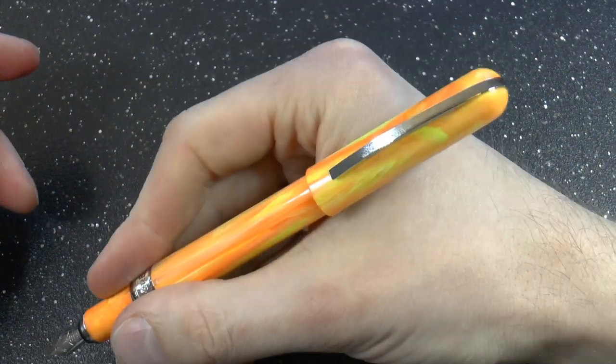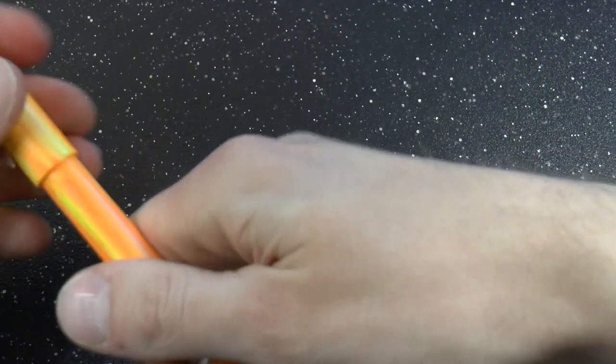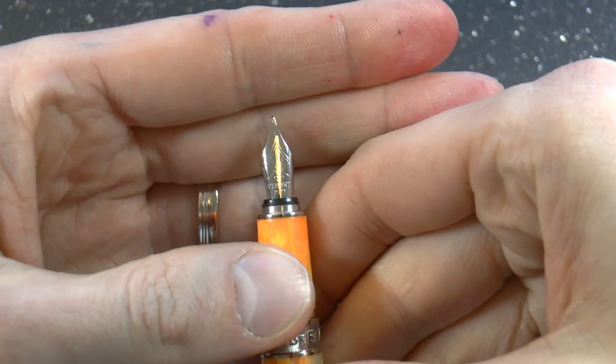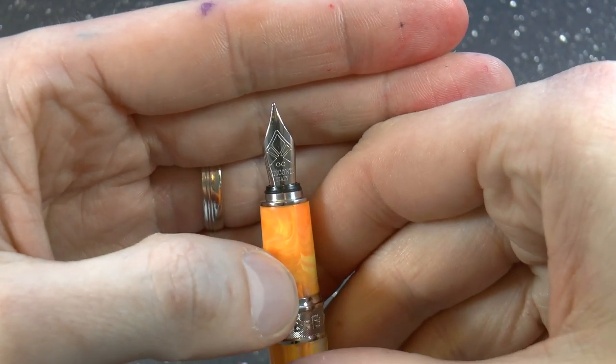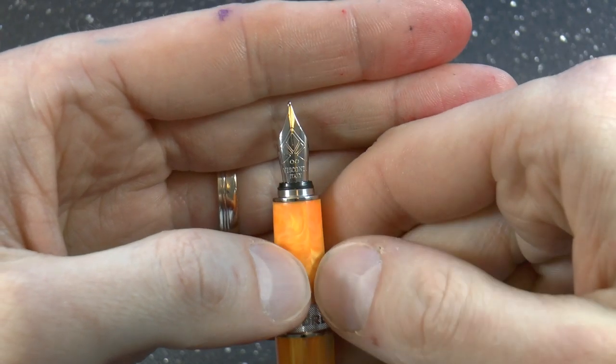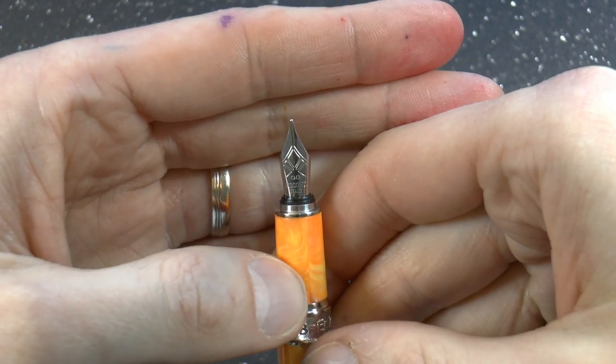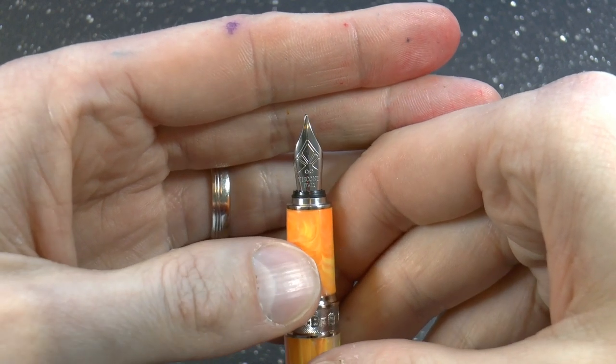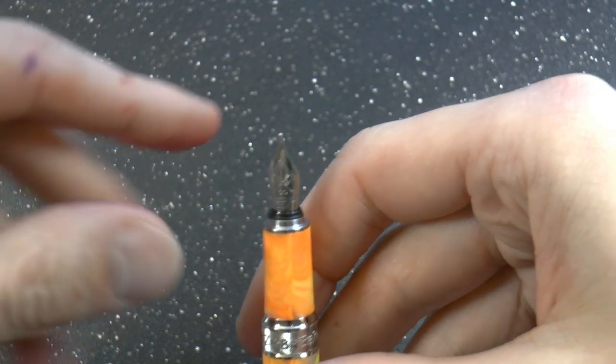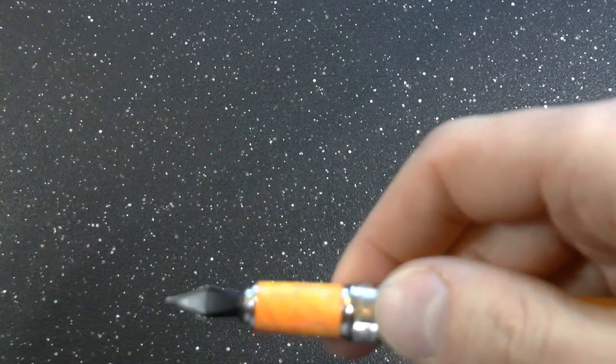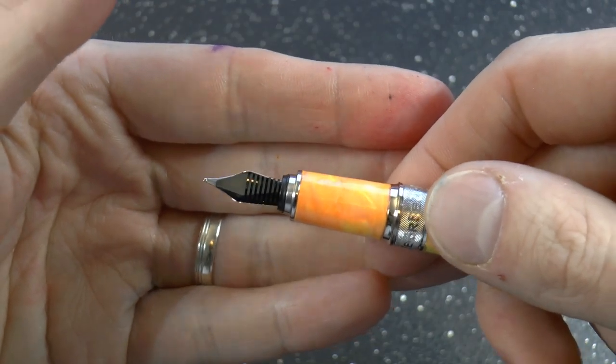You can pose the pen if you want to. It becomes rather large, but you can if you want to. And then we have the nib. And on these new steel style Visconti nibs you have these two little circles. The two little circles indicate a medium nib, one circle indicates a fine nib, and three circles indicates a broad nib. It says Visconti, Italy. And then here at the bottom we have the feed which is plastic.